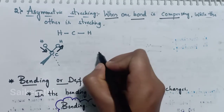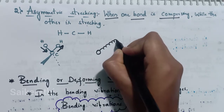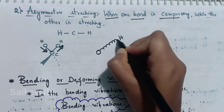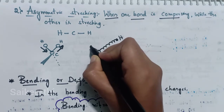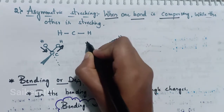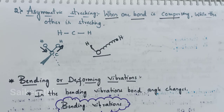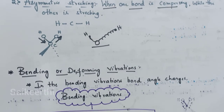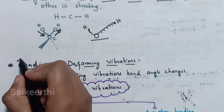In asymmetric stretching, one bond moves away from the central atom while the other comes towards it. This type of stretching is known as asymmetric stretching. Now coming to bending or deforming vibrations.